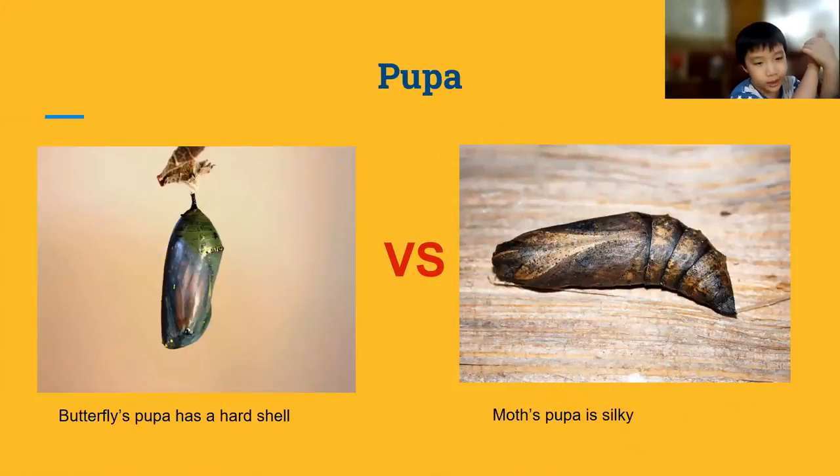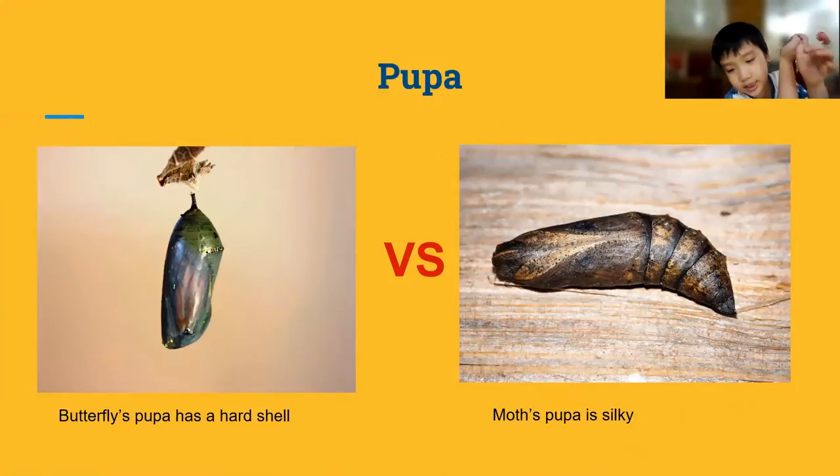Butterflies' pupa has a hard shell. Moths' pupa is silky.